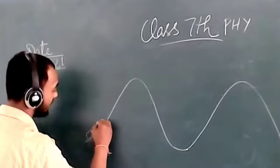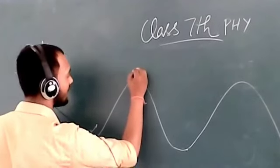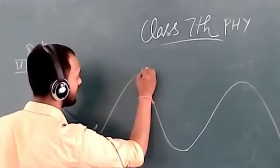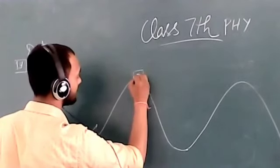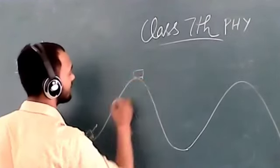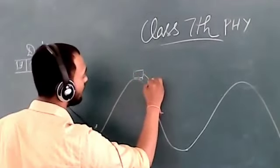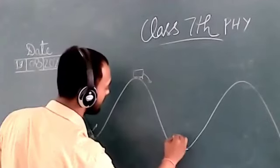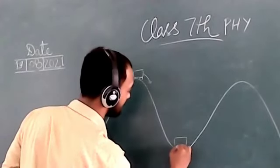In a roller coaster, a car starts moving, reaches a high point, then goes downward, then up again, and so on.